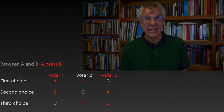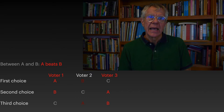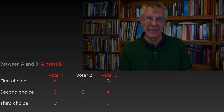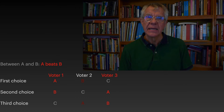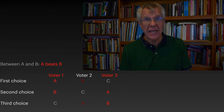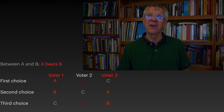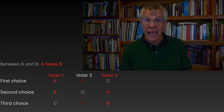So suppose we take these options in pairs. First, we just test A versus B. Voter 1 says A is their first choice, so they vote A. Voter 2 says B is their first choice, so they vote B. Voter 3 has C as first choice, A as second — they prefer A to B, so they vote for A over B. In short, two of our three voters prefer A to B, so A wins.